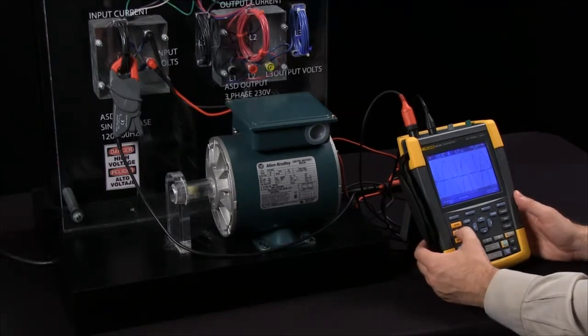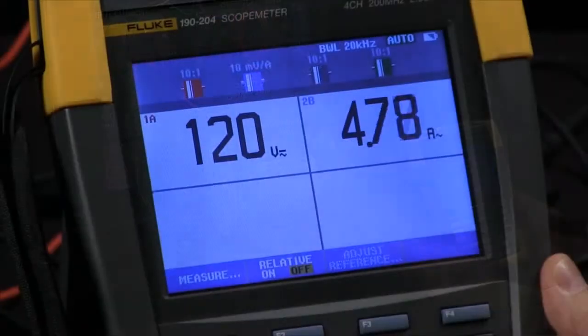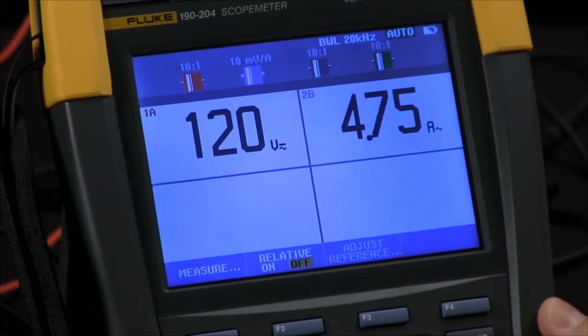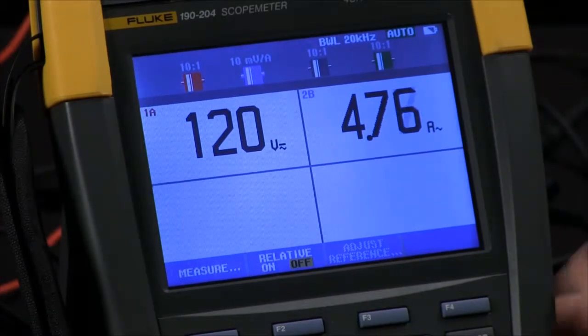I can also shift into meter mode and now we're just displaying this as a numerical value. So there are my 120 volts on the input of the drive and I'm also drawing 4.75 amps.